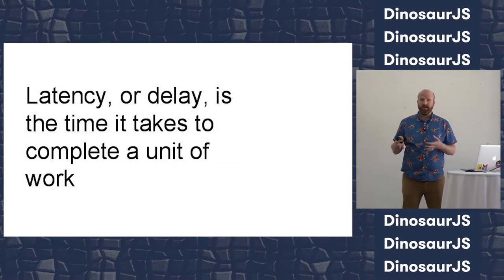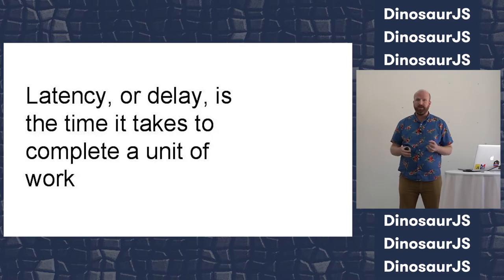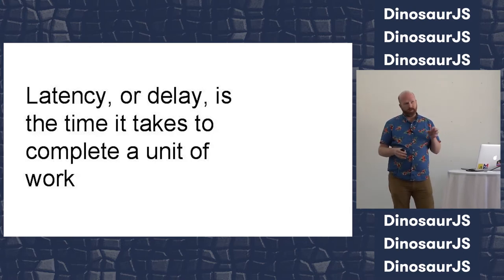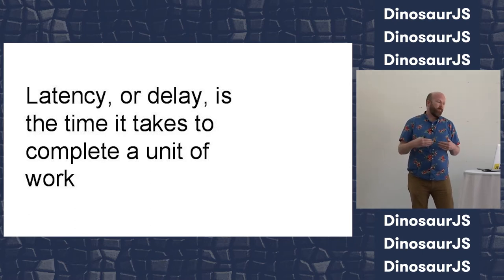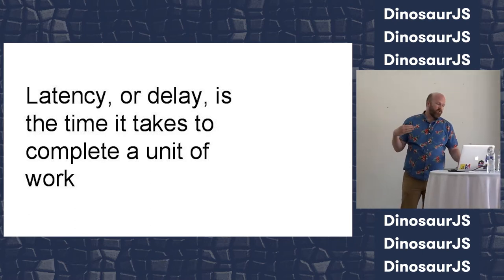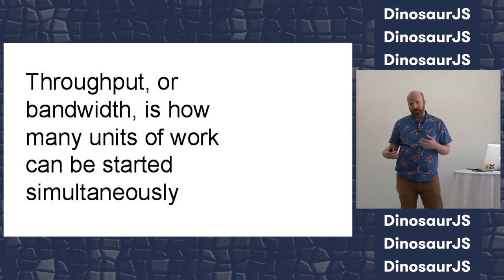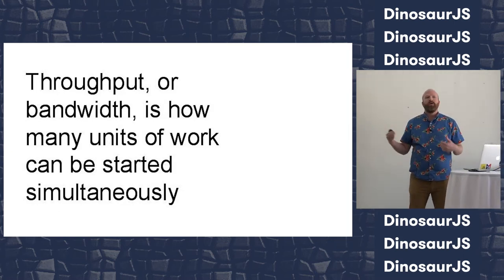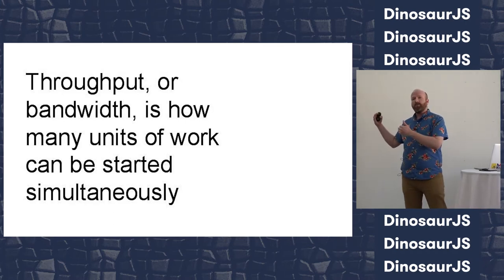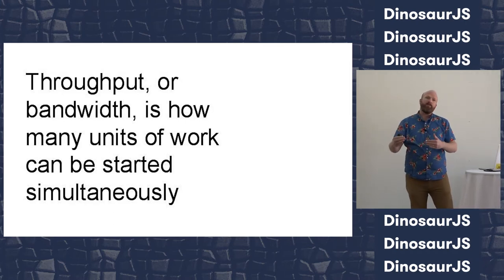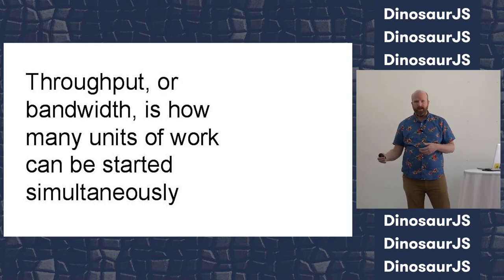What we're going to talk about today is speed, specifically two important aspects. The first is latency — basically how long it takes from start to finish to accomplish a task. I want to contrast that with throughput, which is basically how much work you can do at the same time. It's still going to take the same amount of time for that work to go from beginning to end; you can just do more of it simultaneously.